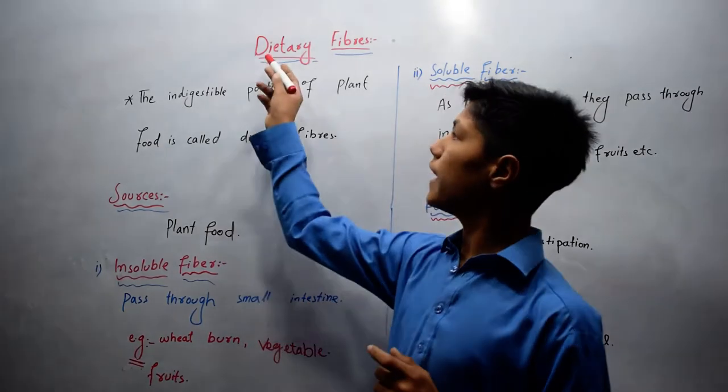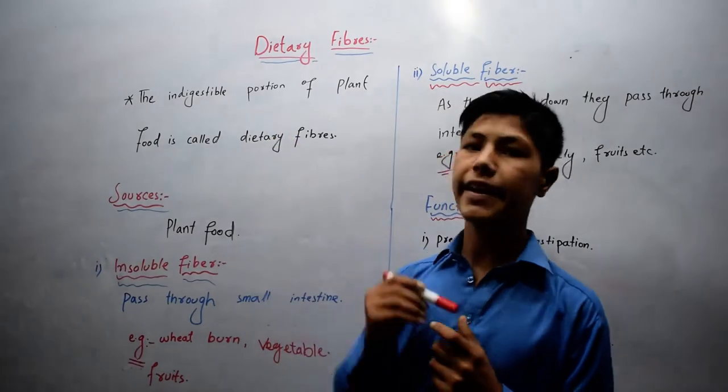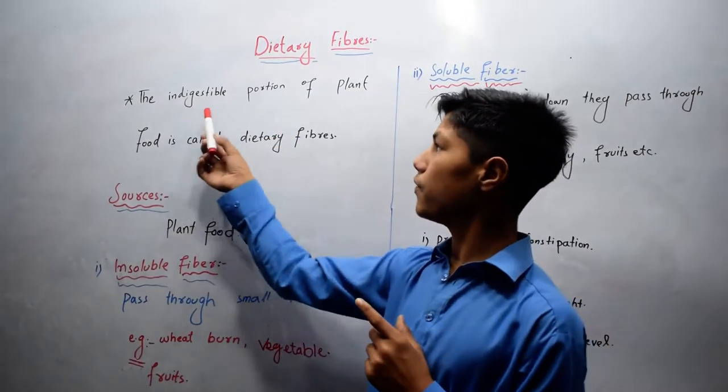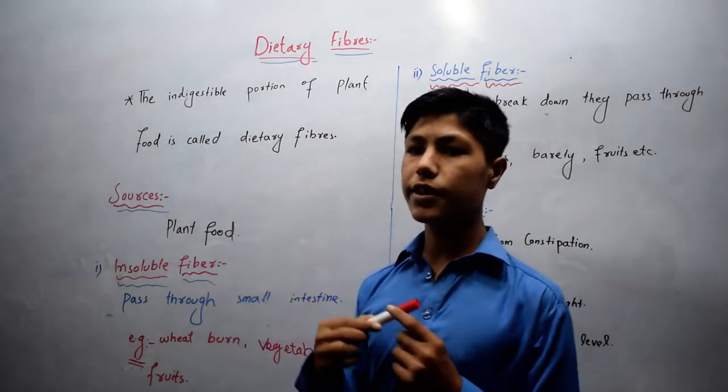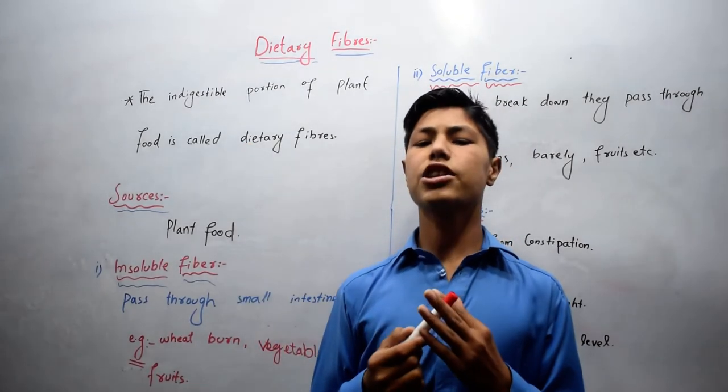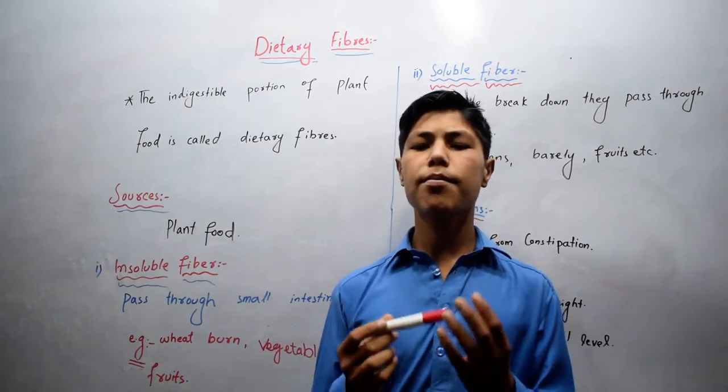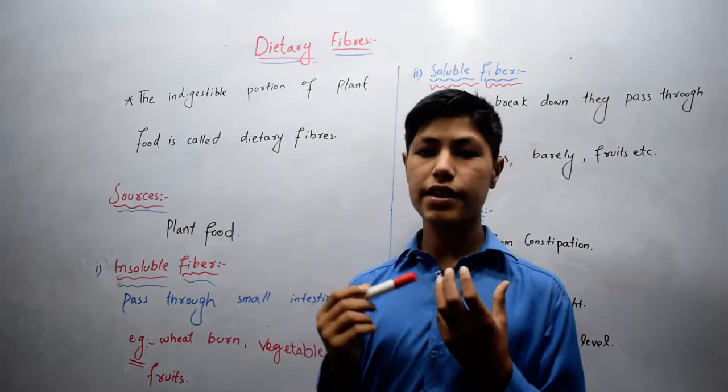Let's talk about dietary fiber. Dietary fiber can be defined as the indigestible portion of plant food. Or it is the undigestible part of food which combined with water is in the form of sticky substances.